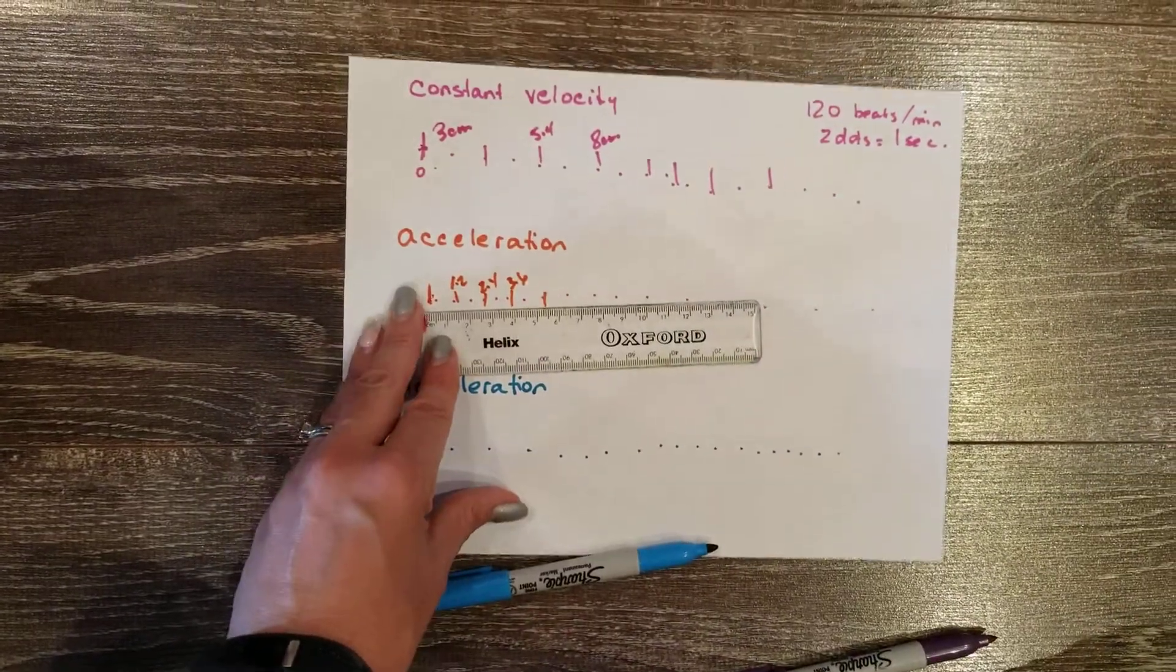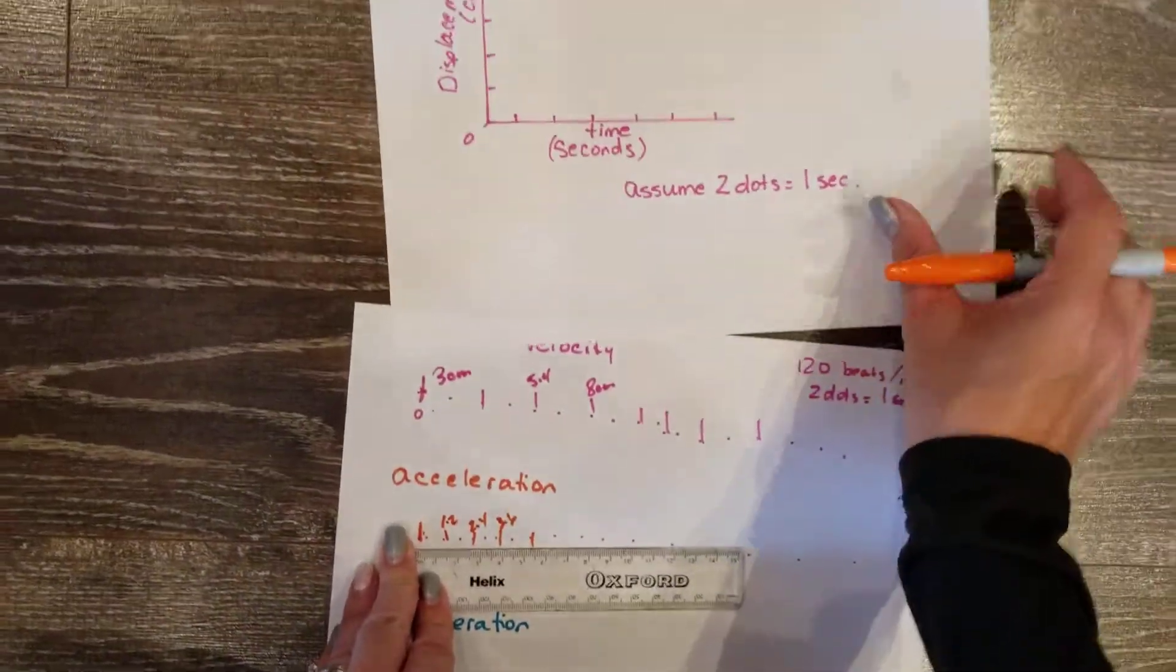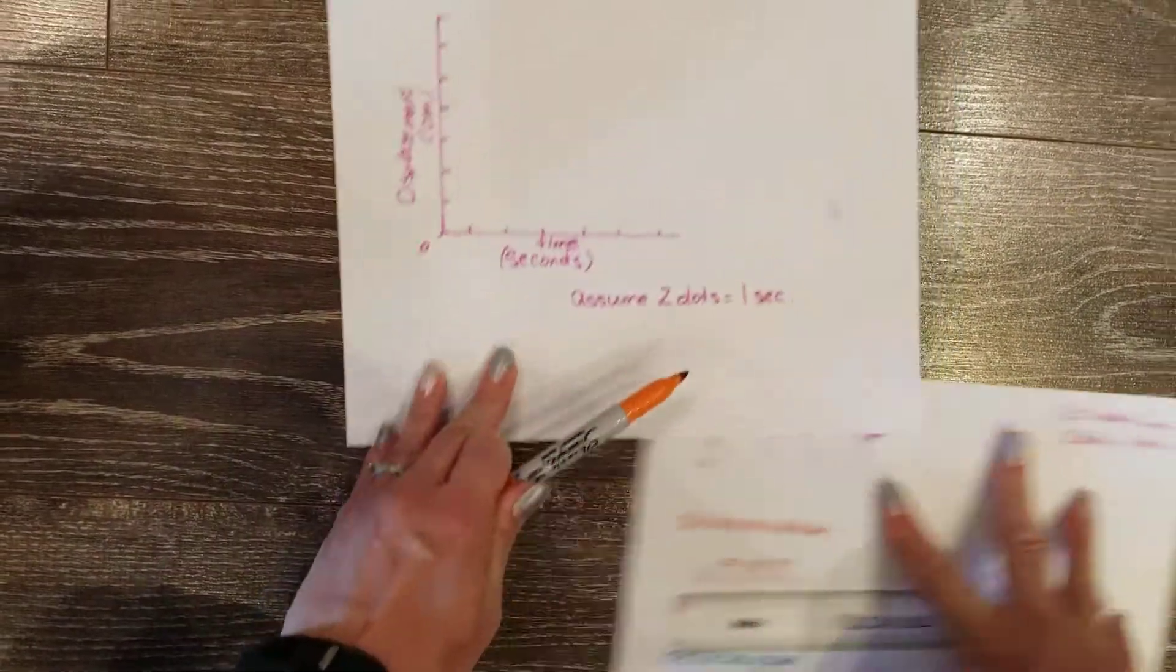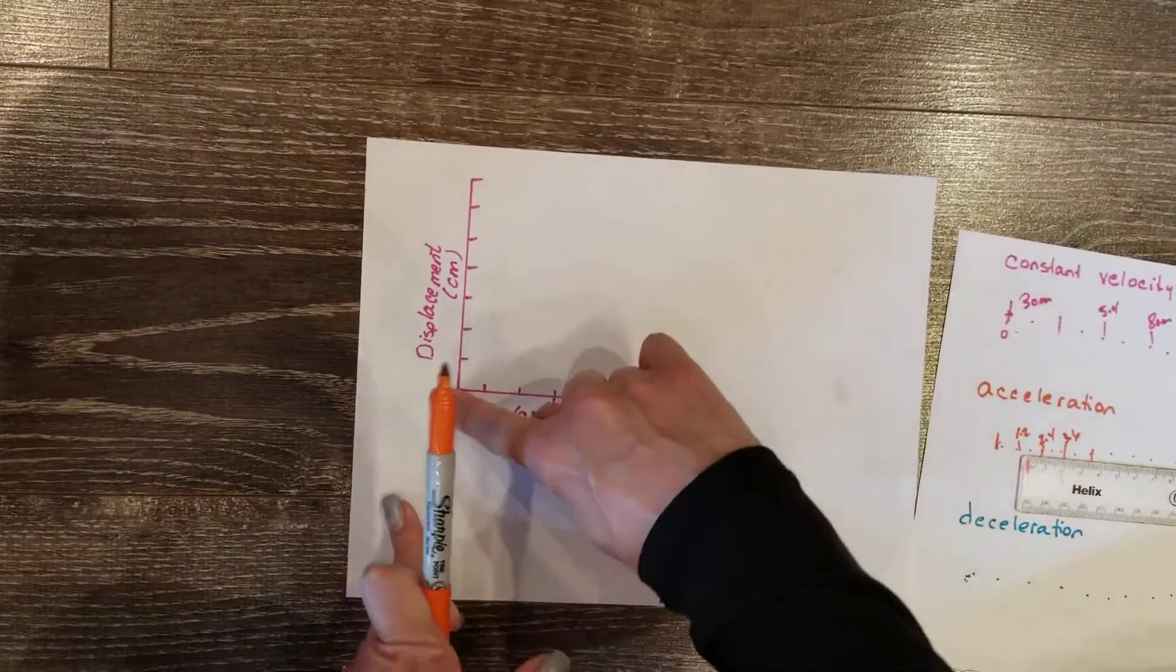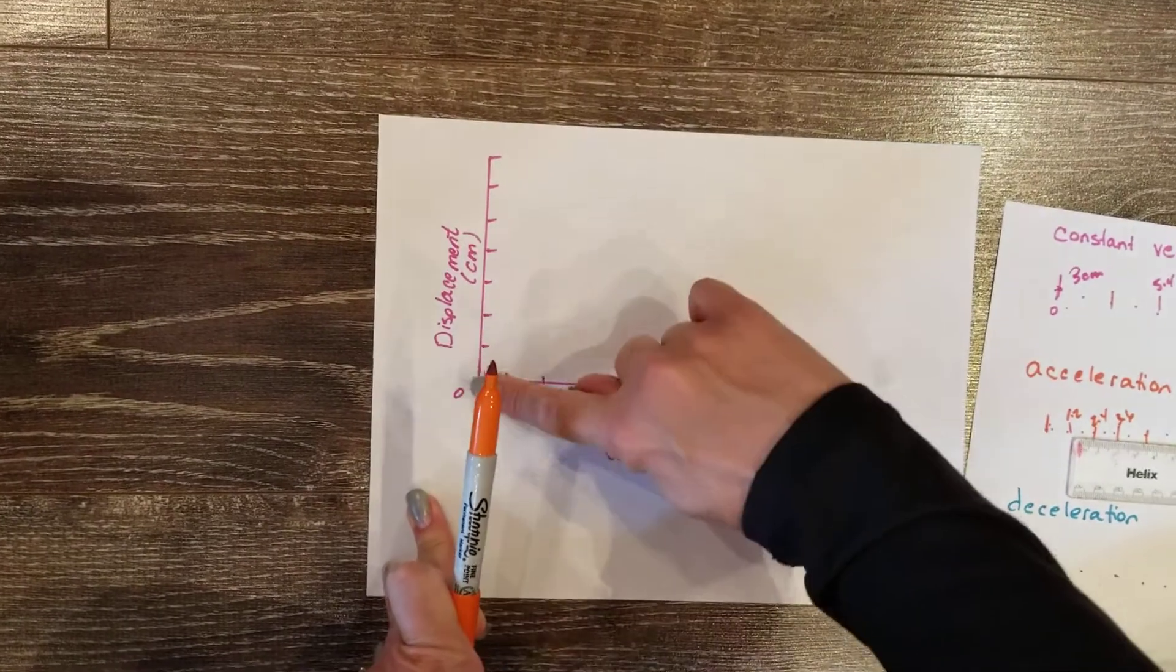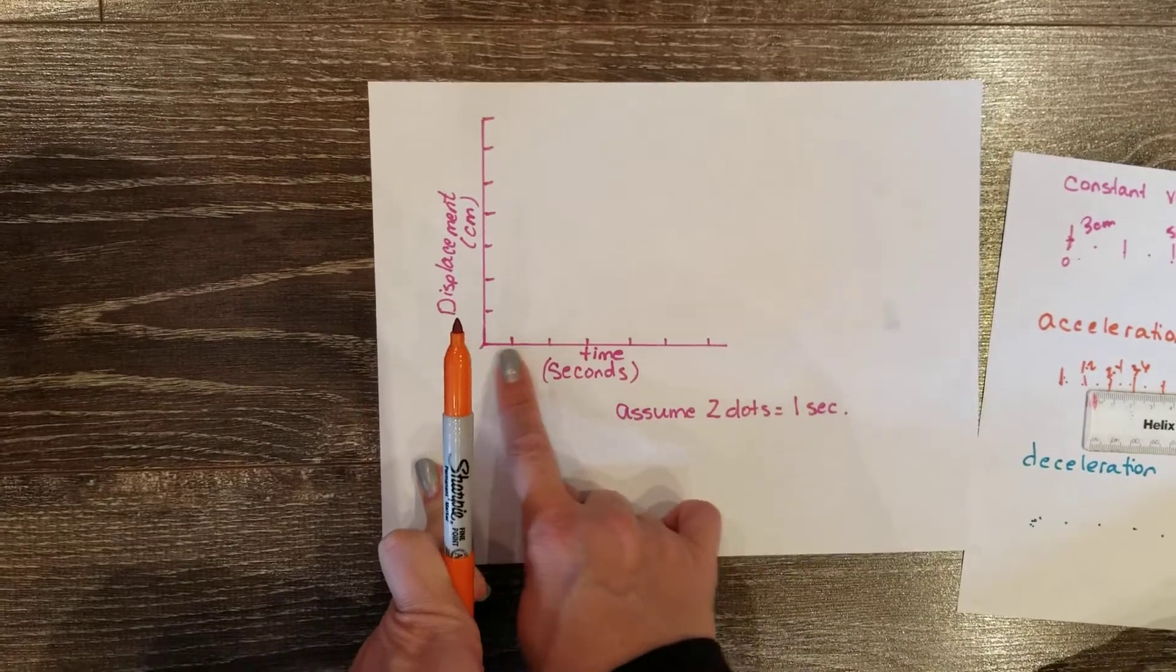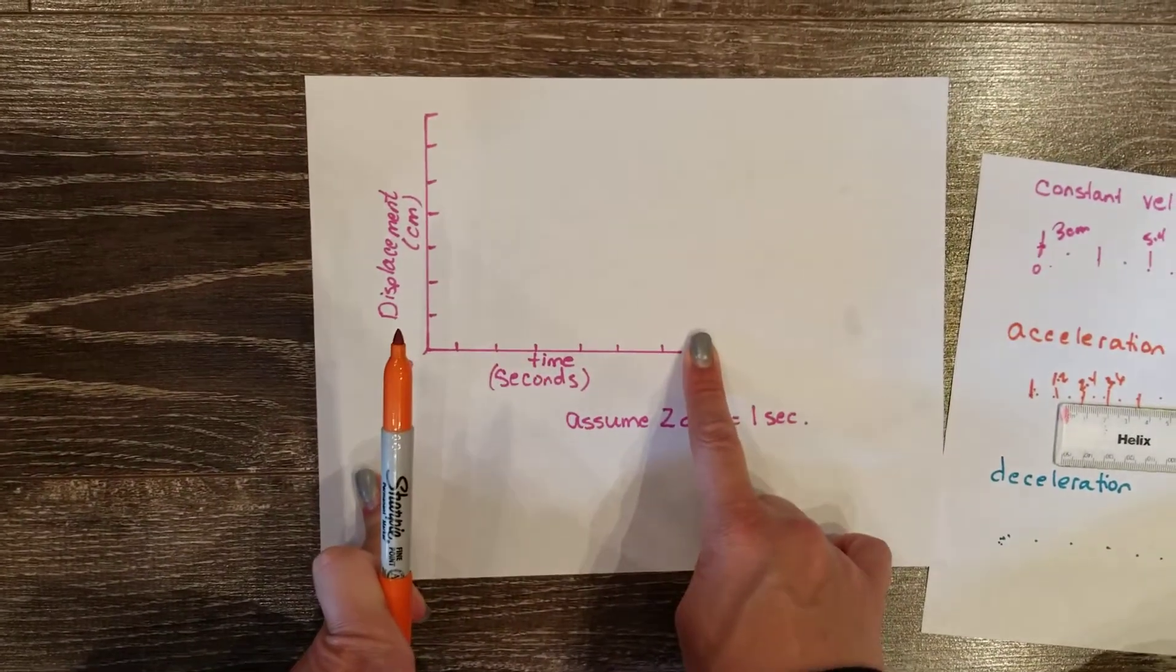We're going to take those and make three graphs, one for each line. Our graphs are going to have displacement going up the side in centimeters. This is how far we've moved from the beginning. And the time in seconds going along the bottom.